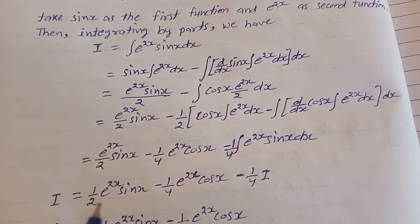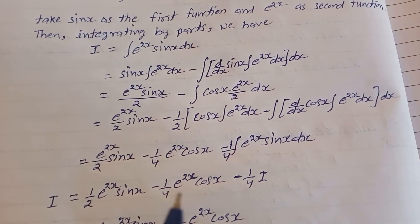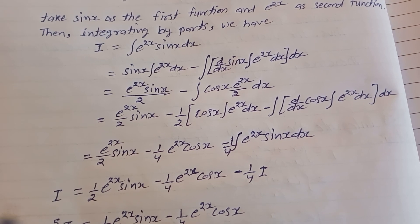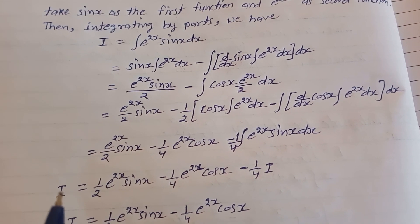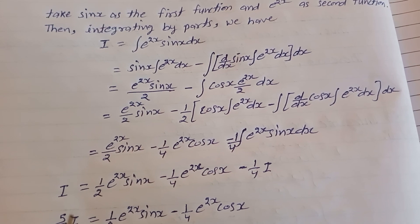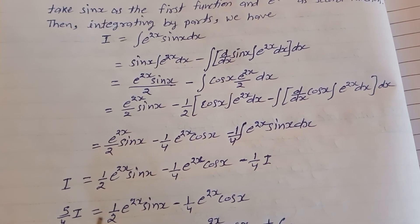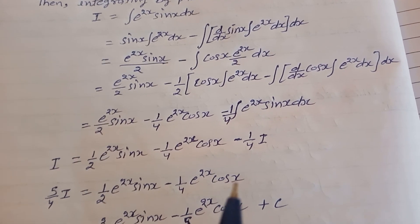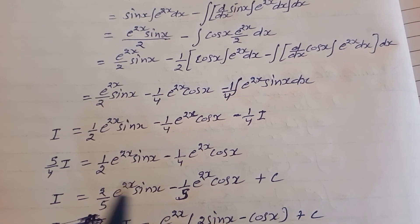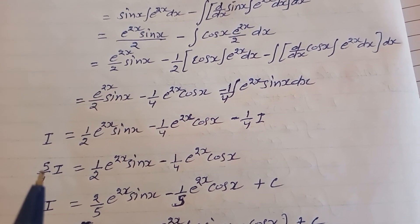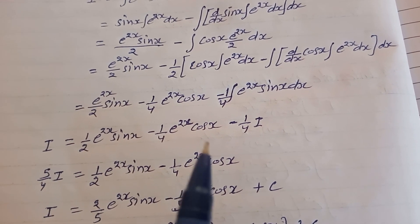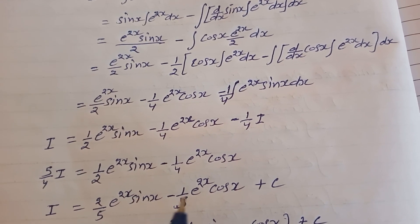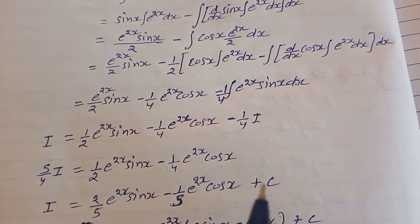So I equals 1/2·e^(2x)·sin(x) minus 1/2·e^(2x)·cos(x) minus 1/4·I. Transferring the I term to the left side: I plus 1/4·I equals 5/4·I, which equals 1/2·e^(2x)·sin(x) minus 1/4·e^(2x)·cos(x). Dividing both sides by 5/4, we get I equals 2/5·e^(2x)·sin(x) minus 1/5·e^(2x)·cos(x) plus C.